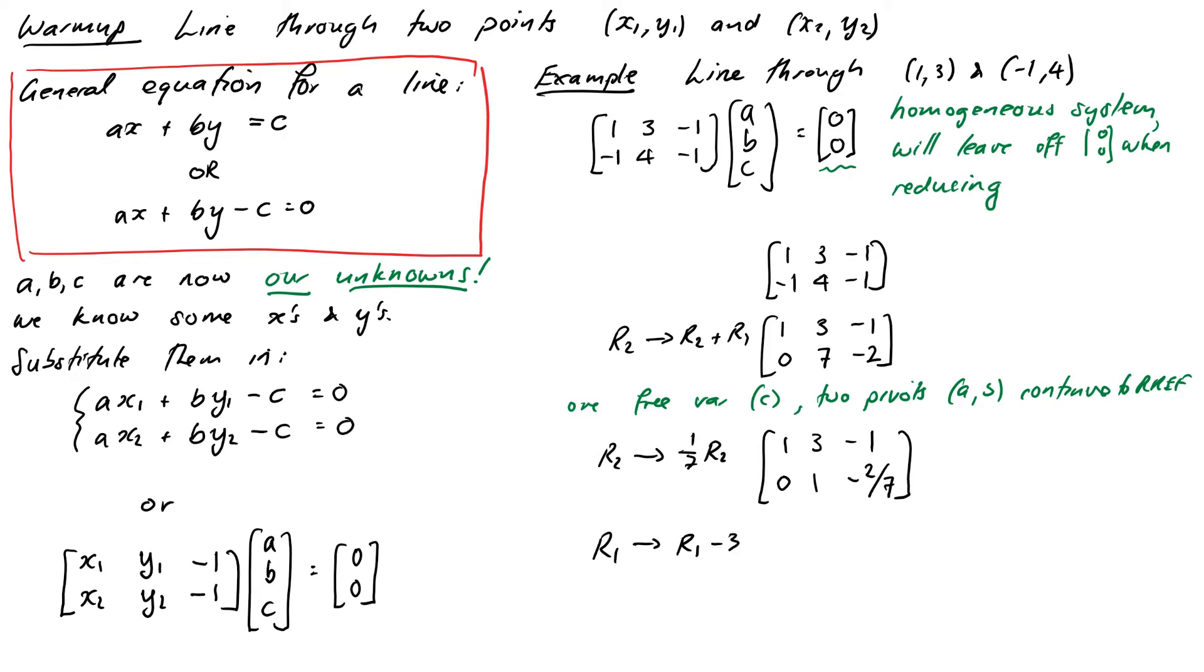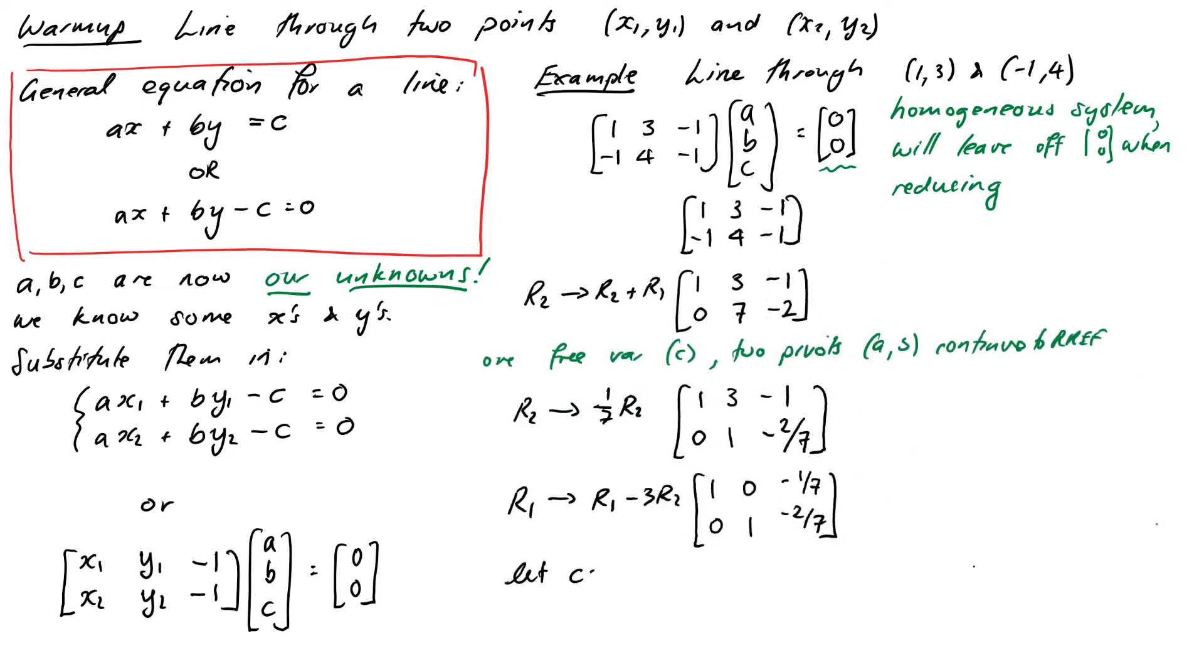And then we'll clear above that second pivot to get to reduced row echelon form which will be row 1 goes to row 1 minus 3 row 2. We'll have the matrix 1, 0, negative 1/7 and 0, 1, negative 2/7. Okay so let's now write down our general solution. So our free variable is c so we'll let c equal t.